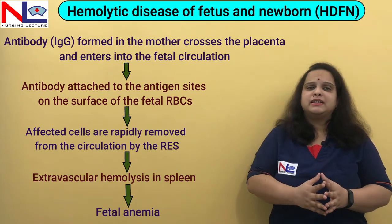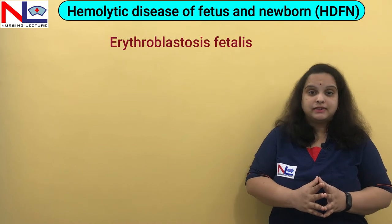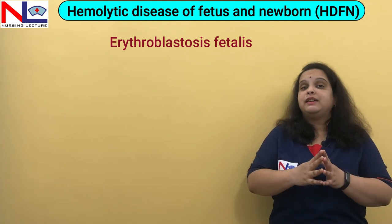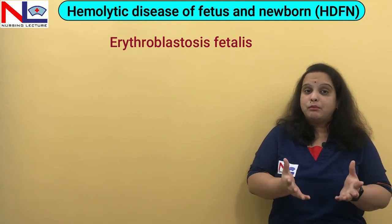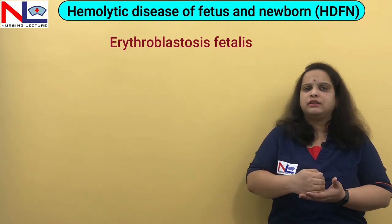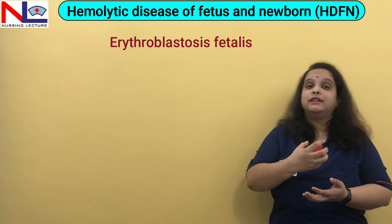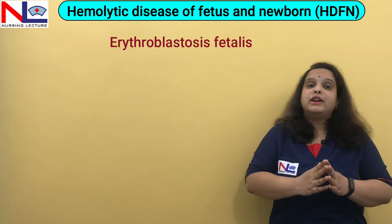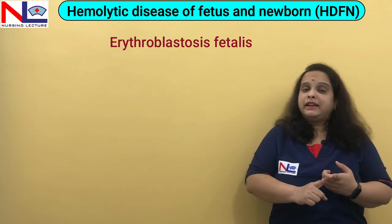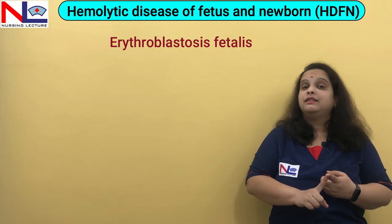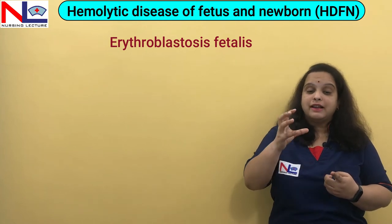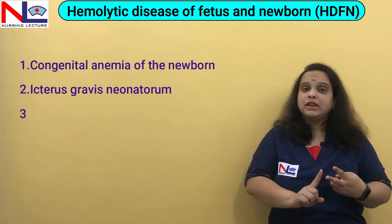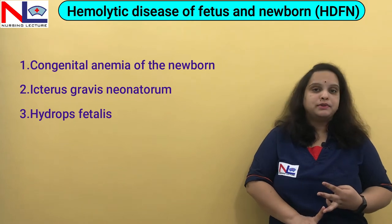Previously this condition was termed erythroblastosis fetalis. These hemolytic diseases can be mild, moderate, or severe, depending on the number of antibodies that enter the fetal circulation. The three main hemolytic diseases resulting from RBC destruction by these antibodies are: congenital anemia, icterus gravis neonatorum, and hydrops fetalis.